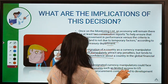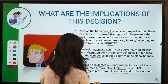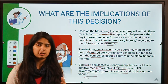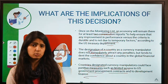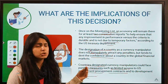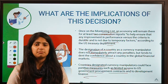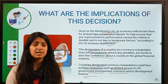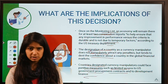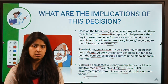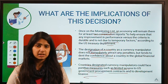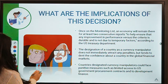Countries on the list could face punitive measures from the US such as limited access to US government procurement contracts and developmental finance. The US might put some trade restrictions or barriers to control the surplus experienced by the other country or reduce its own deficit. Many countries like Vietnam have not accepted the accusations and deny engaging in manipulation, so we will have to wait and see what happens ahead.